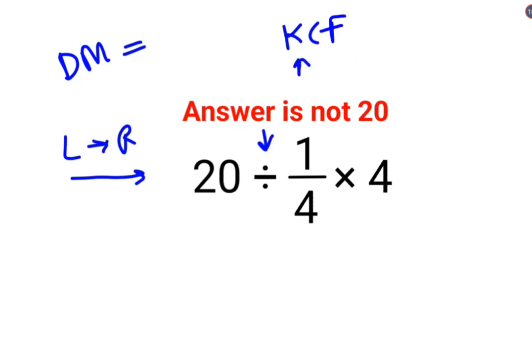for division we follow the rule of KCF where K stands for keeping the first number as it is, C stands for changing the division sign to multiplication, and F stands for flipping or taking the reciprocal of 1/4 which is 4, multiplied by 4.